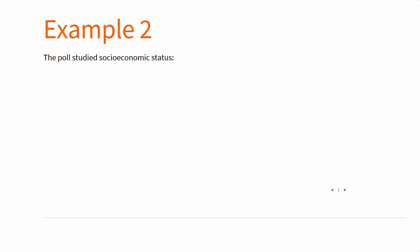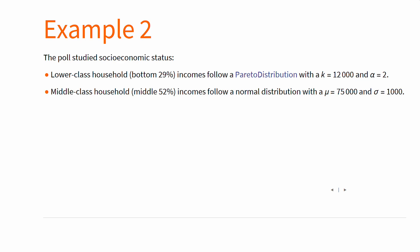As another example, consider this poll studying socioeconomic status. Lower-class household incomes follow this Pareto distribution, while middle-class household incomes follow this normal distribution, and upper-class household income follows this gamma distribution. So what's the expected distribution?